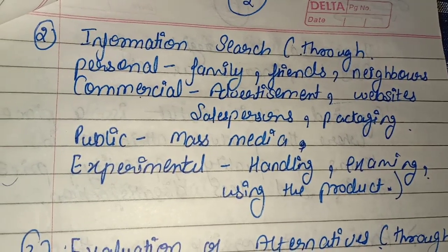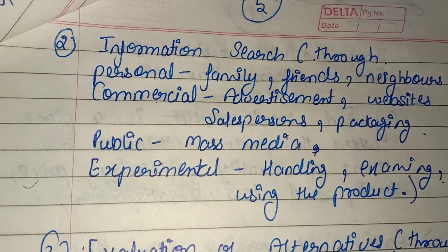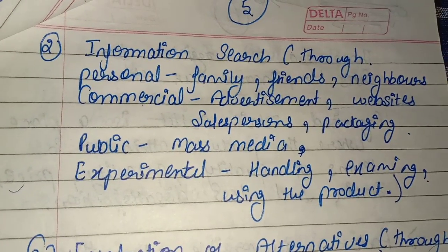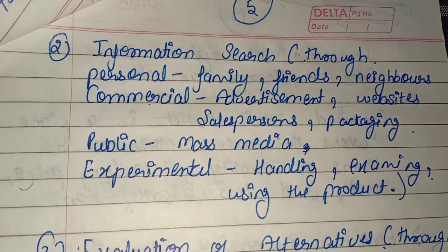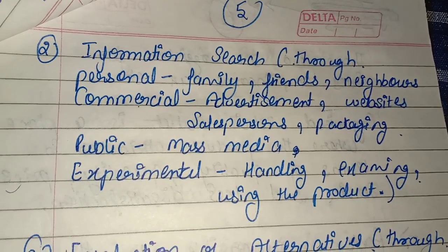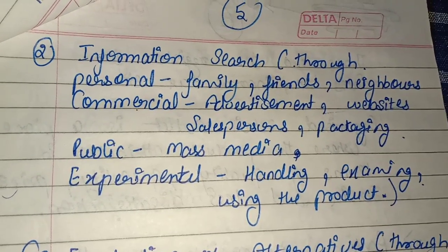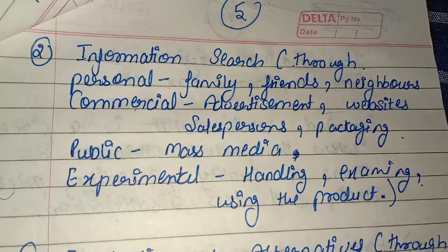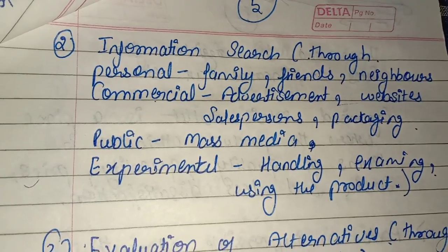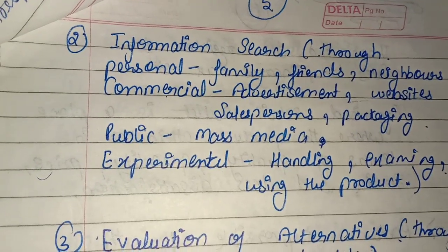The second stage is information search. Once the buyer recognizes a problem or need, they search for information about a product. They gather information through personal sources such as family, friends, and neighbors; commercial sources such as advertisements, websites, salespersons, and packaging; public sources such as mass media; and experiential sources such as handling, examining, and using the product. They gather information to decide whether to buy a particular product or not.